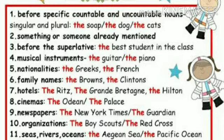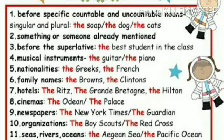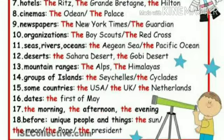Number six: family names — the Browns, the Clintons, the Wright Brothers. Number seven: hotels — the Ridge, the Hilton, etc. Number eight: cinemas — the Odeon, the Palace. Number nine: newspapers — the New York Times, the Guardian.